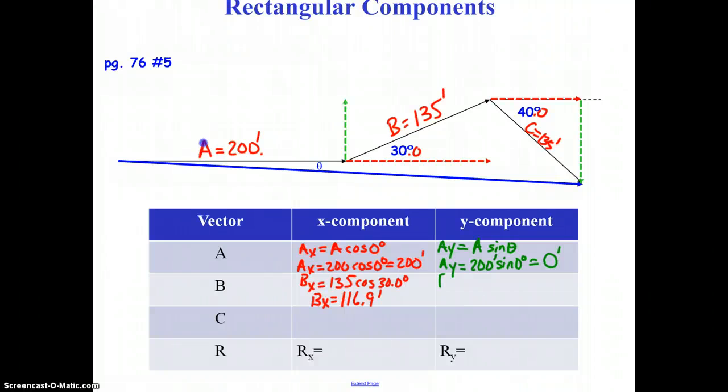We'll now go ahead and calculate the y component of B, which would be 135 sine of 30, so By would be 67.5 feet.